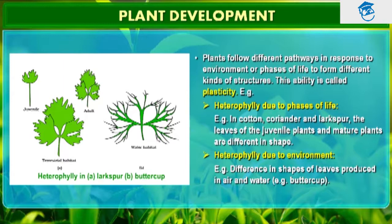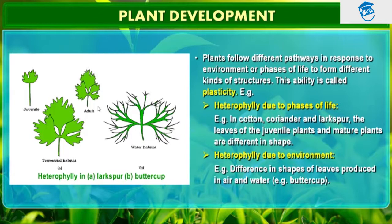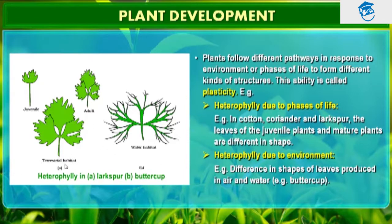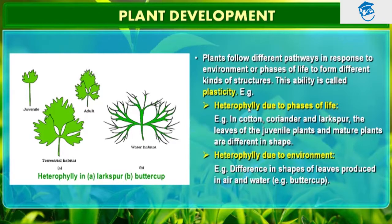The leaf of the juvenile plant is different in shape compared to the adult or mature plant. Differences in the shape of leaves produced in air and those produced in water in buttercup can also represent heterophylly development due to environment. This buttercup is present in terrestrial habitat and this one is in water habitat — you can see the difference in structure due to the change in environment. This phenomenon of heterophylly is an example of plasticity.